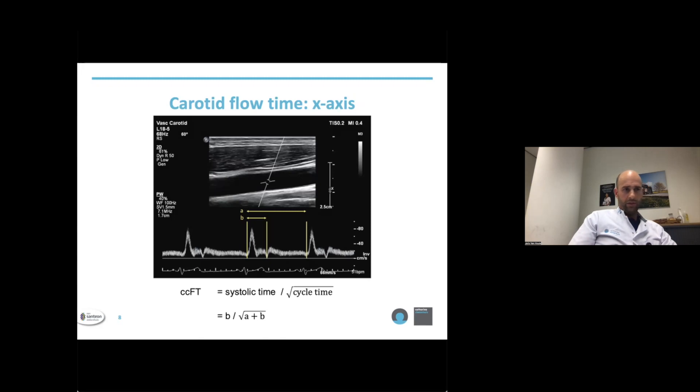In order to allow standardization, it is needed to correct the systolic flow time for heart rate, as the cycle time shortens when heart rate increases, and vice versa. Accordingly, the corrected carotid flow time is calculated by dividing the systolic flow time by the square root of the cycle time.